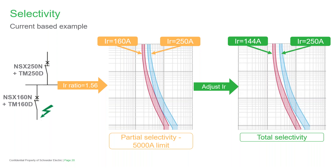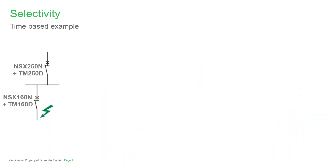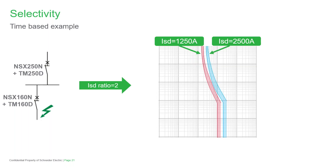Moving further down the graph, the ratio of these two devices in their short circuit ratings is 2, which is the limit to ensure time selectivity. A final note is that these curves can be adjusted on the trip units, with higher electronic trip units having more available adjustable settings. These are also available on design software such as electrical OMS or Trimble.